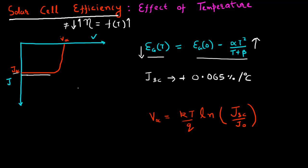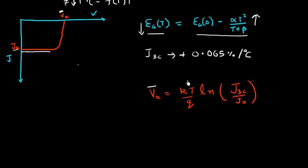Now the second thing I turn my attention to is how the open circuit voltage behaves as a function of temperature. VOC depends upon the short circuit current and J₀. If I take just a cursory look at this relationship, I might be inclined to think that VOC also increases with temperature, because there is a temperature term multiplying the whole relationship, and JSC, as we just discussed, is also slightly increasing as a function of temperature.